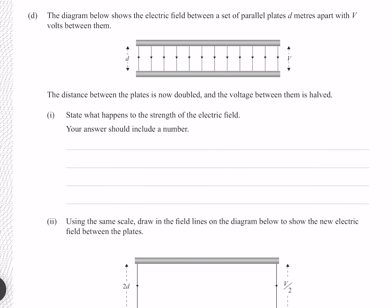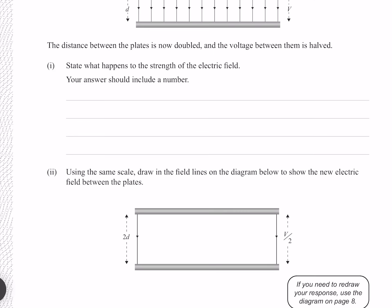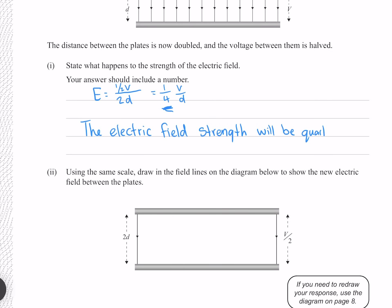The diagram shows the electric field between parallel plates d meters apart with v volts between them. The distance is now doubled and the voltage is halved. Because electric field strength is voltage over distance, doubling the distance and halving the voltage gives a quarter of the original strength. So the electric field strength will be quartered.